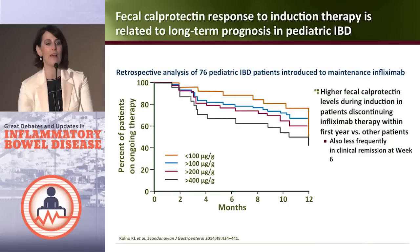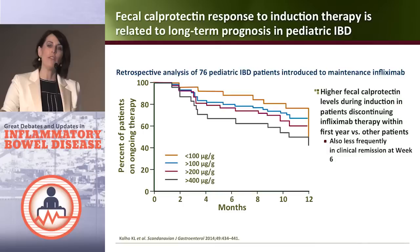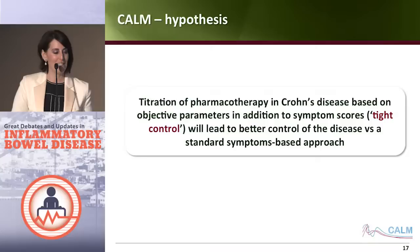In a pediatric cohort, the delta calprotectin — meaning the change in calprotectin after induction therapy with infliximab — predicted whether a patient would still be on infliximab at one year. If there was no significant change in calprotectin, patients dropped off and needed to switch therapies. If calprotectin was still greater than 400 at week six after induction with infliximab, there was a lower likelihood of remaining on drug at one year. This suggests that if you're not achieving mucosal integrity change early with these drugs, you should be thinking about optimizing therapy early.